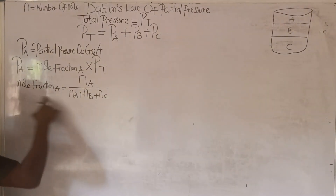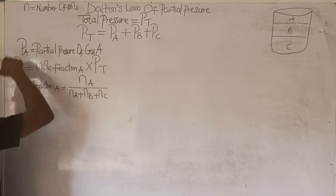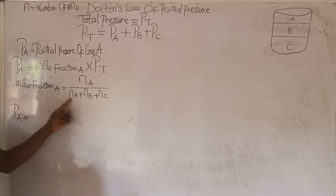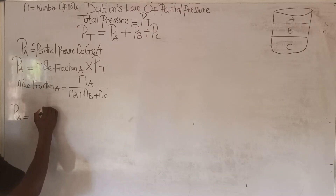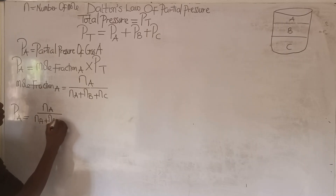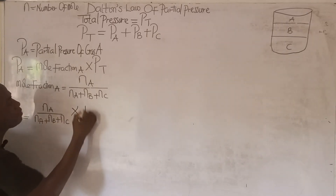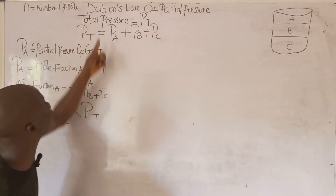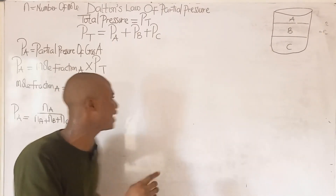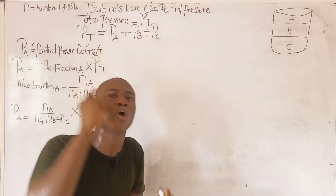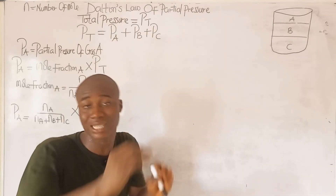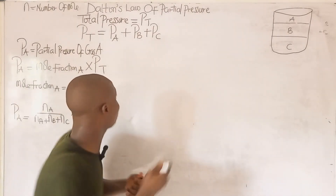Now let's substitute the mole fraction formula into the partial pressure expression for Gas A. So the partial pressure of Gas A equals: number of moles of Gas A, over (number of moles of Gas A plus number of moles of Gas B plus number of moles of Gas C), times P_t, the total pressure of the gas mixture. This value P_t is always given in a practice question.